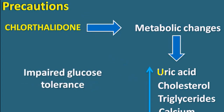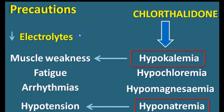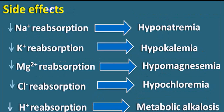Chlorthalidone should not be utilized in the presence of gout, severe hyperlipidemia, or hypercalcemia. Use with caution in pre-diabetic and uncontrolled diabetic patients. As for electrolytes, it produces hypokalemia, hypomagnesemia, and hyponatremia similar to thiazide diuretics, but the percentage of these effects is relatively less compared to thiazides. Secondary to hypokalemia: muscle weakness, fatigue, and potentially lethal cardiac arrhythmias. Secondary to hyponatremia and hypovolemia: hypotension and dizziness.